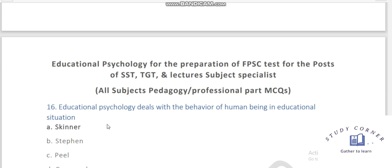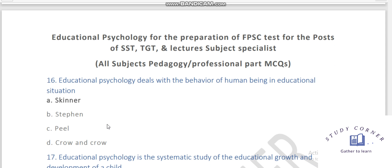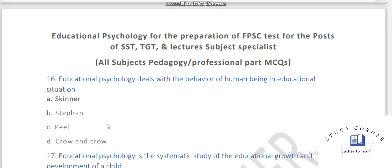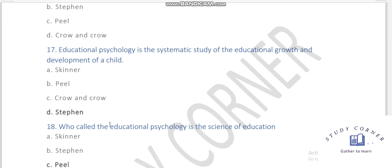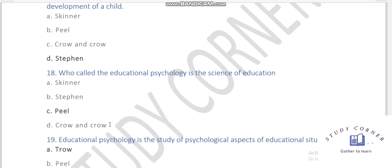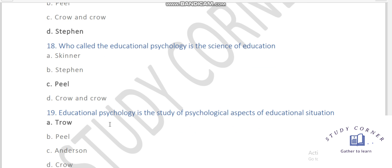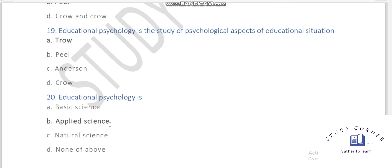Educational psychology deals with the behavior of human beings in educational situations. Educational psychology is the systematic study of the educational growth and development of a child. Who called educational psychology is the science of education? Educational psychology is the study of the psychological aspects of the educational situation.